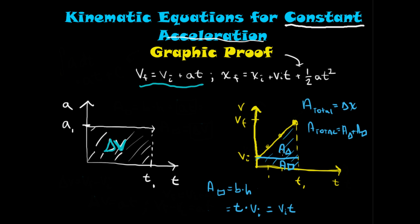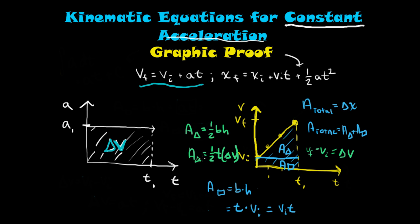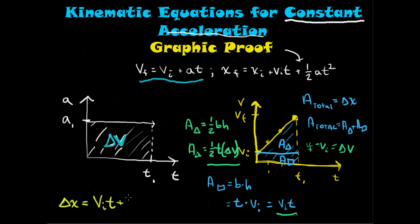Now what's the area of the triangle? The area of a triangle is one-half base times height. The base is t and the height is vf minus vi, which we know equals the change in velocity, Δv. So the area of the triangle is one-half t·Δv. We now have vi·t for the area of the rectangle and one-half t·Δv for the area of the triangle.